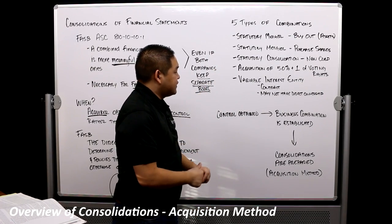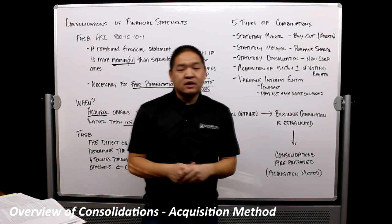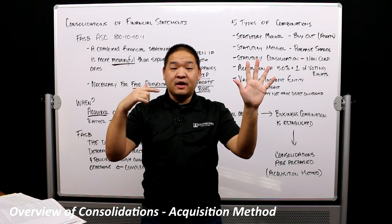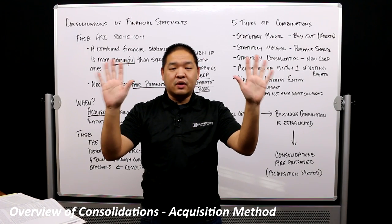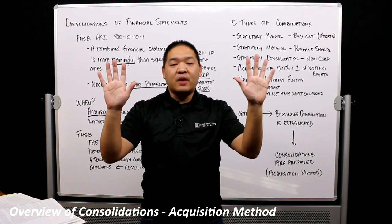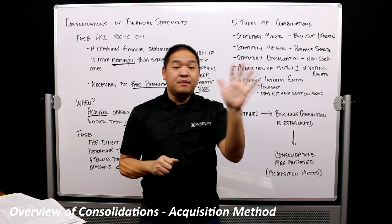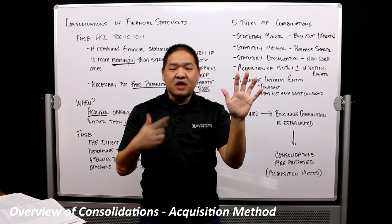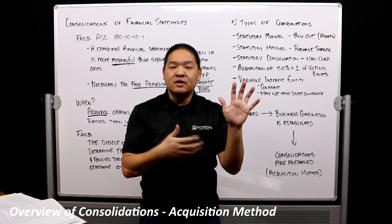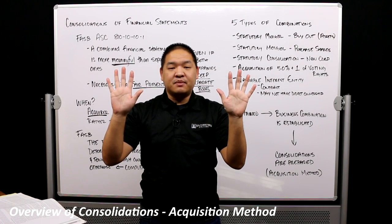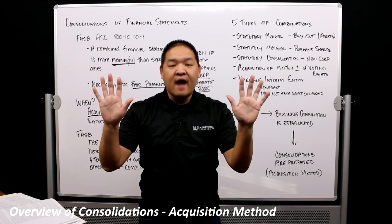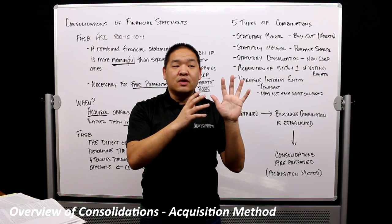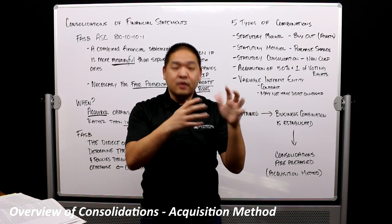The fourth type is the acquisition of 50% plus one. We still have Company A and Company B, but Company A acquires 50% plus one of Company B — therefore they have control, but we still have two separate corporations. We might do this because Company B has good intrinsic value and people know its brand, so we don't want to dissolve it. We just acquire 50% plus one and let them continue to run as they were, because the brand is so important.